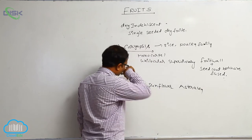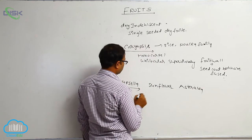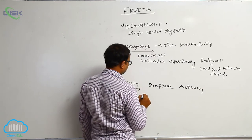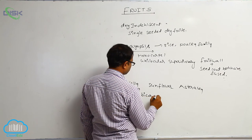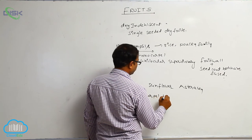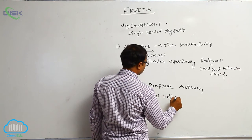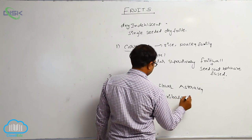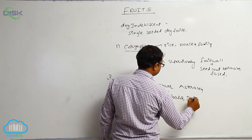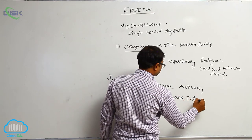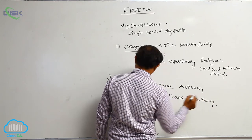Cypsela is formed from a bicarpel, unilocular, inferior ovary.